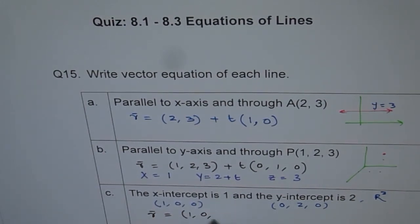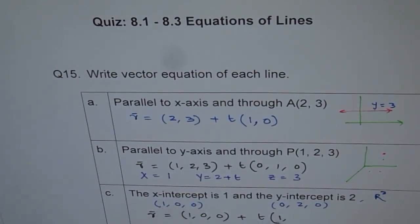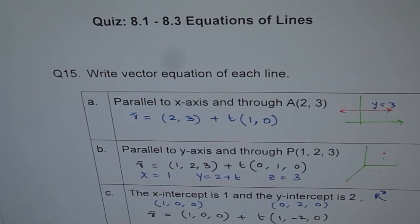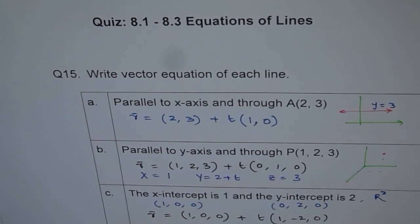Plus t times direction. 1 minus 0 is 1. 0 minus 2 is minus 2. 0 minus 0 is 0. That's what. So simple as that. I hope you appreciate how to get equations of lines. Thank you.